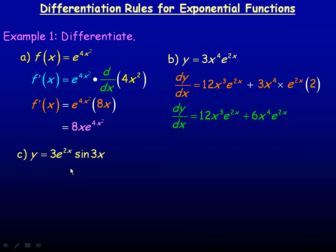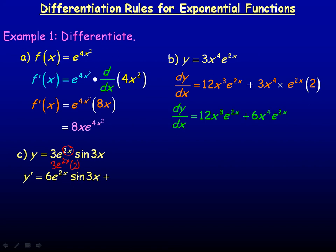In example C, we're given y equals 3e to the 2x times sine 3x, so it's another product. Using the product rule, the first part: I'm going to differentiate 3e to the 2x. That gives 3e to the 2x times the derivative of the exponent. The derivative of 2x is 2, so multiplying 2 by 3 gives 6, and we get 6e to the 2x. This is then multiplied by the second function, sine 3x.